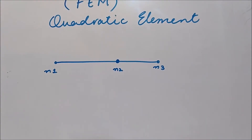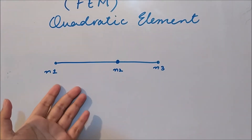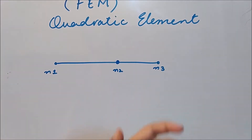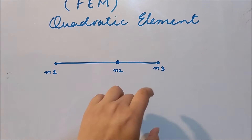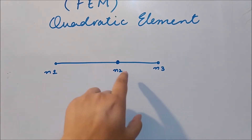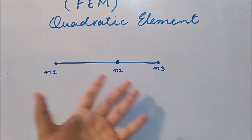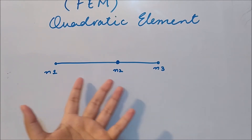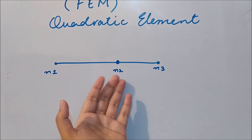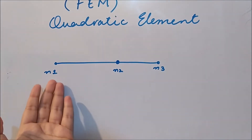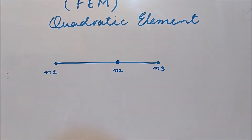We have a quadratic element, which means we have an element with three nodes. This is the first node, this is the second node, and this is the third node. The second node can be halfway between the first and the third node, or anywhere between the first and third node. If it is exactly halfway, that would be a special case. But it can be anywhere between the first and third node.